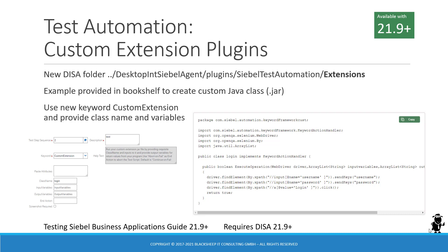You then add a step to your test script using the new Custom Extension keyword. That keyword requires you to provide the class name and any input or output variables required. You can also specify to abort on failure of that step or continue on failure as the end action.